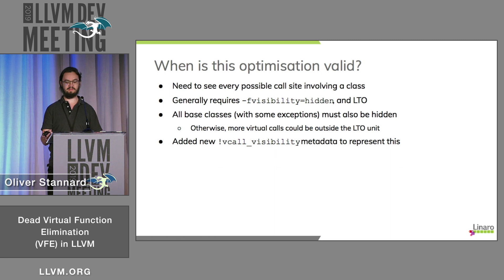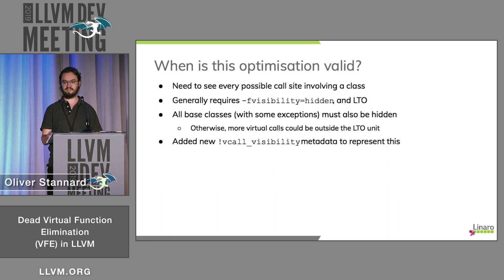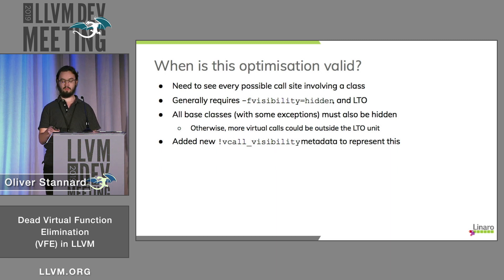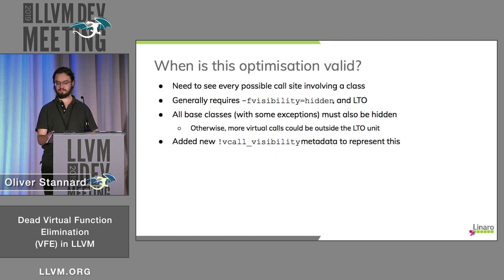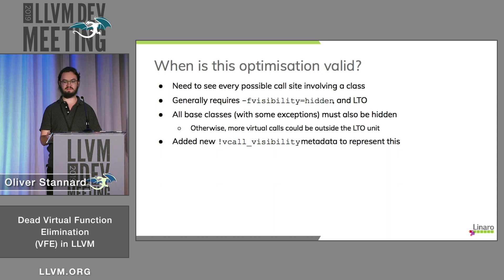This obviously isn't always going to be valid. We need to know that we can see every call site for a particular class. In general, this is going to be valid when you're using Visibility Hidden and LTO, though visibility can be changed on a per-class basis. So we actually need all base classes to have hidden visibility if they have V-tables. This isn't a concept we can reconstruct in LLVM IR — it requires source-level information — so I added new metadata to represent this new type of visibility.